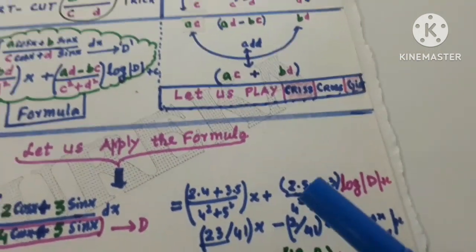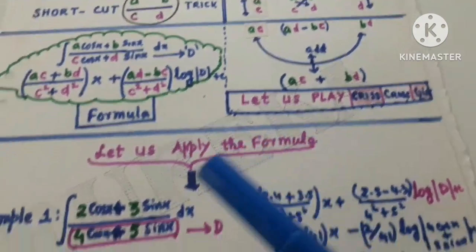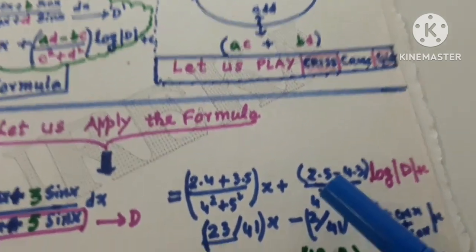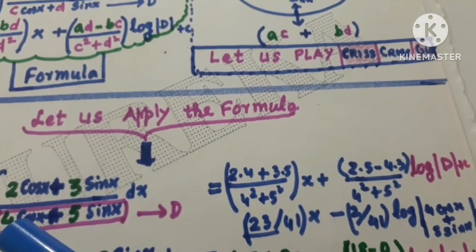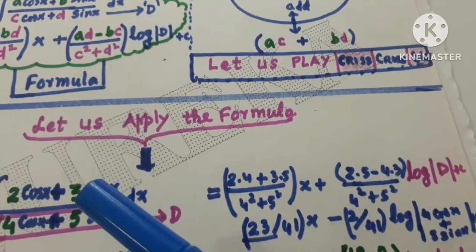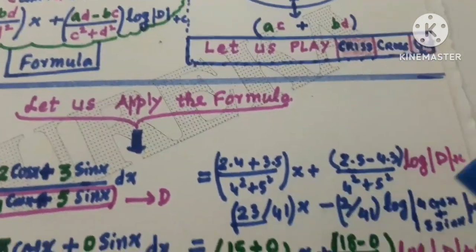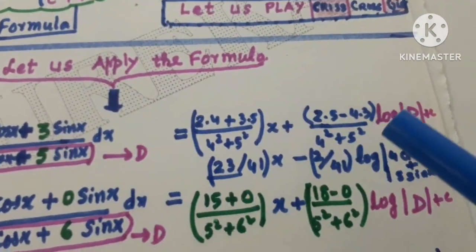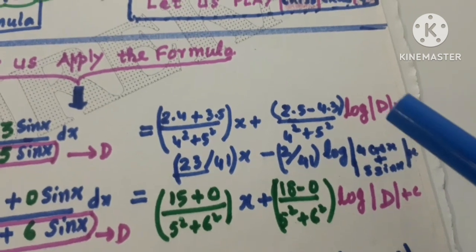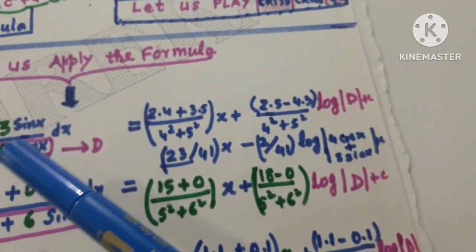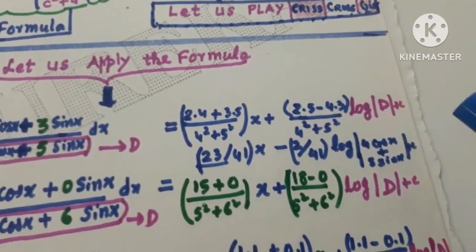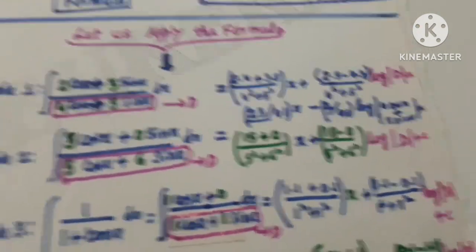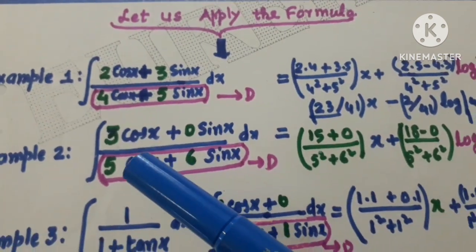So a=2, d=5 gives ad=10; b=3, c=4 gives bc=12; ad − bc = 10 − 12 = −2. Denominator: c² + d² = 4² + 5² = 41. Then log of the denominator, which is 4 cos x + 5 sin x. Question is done.